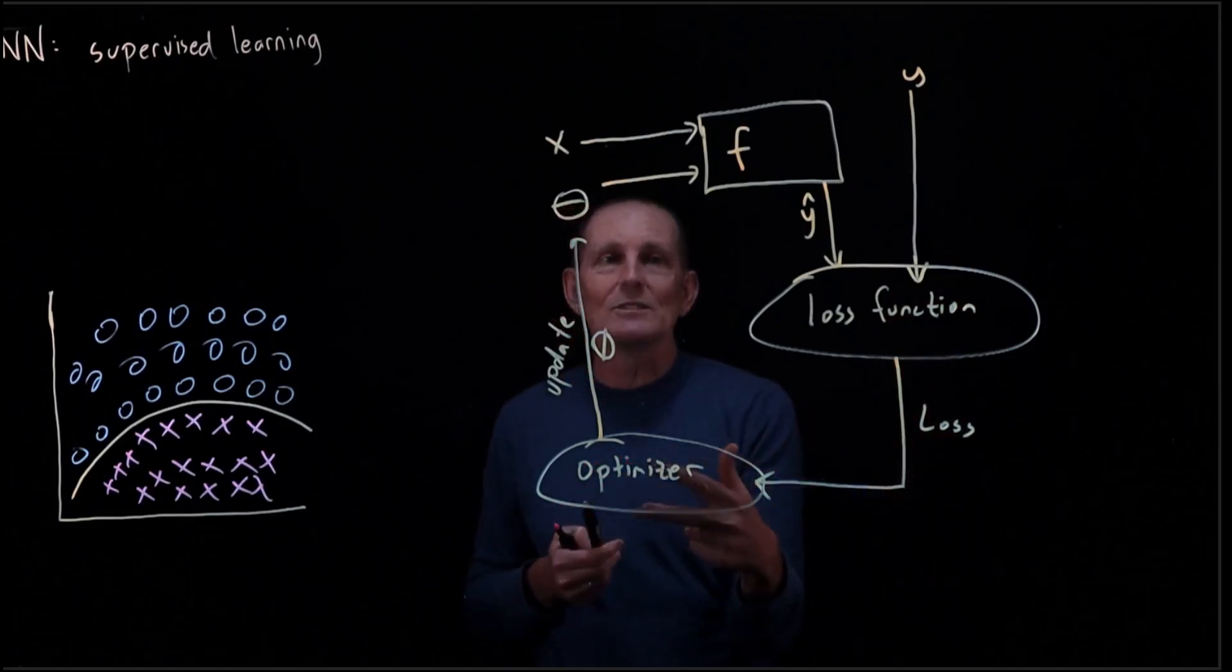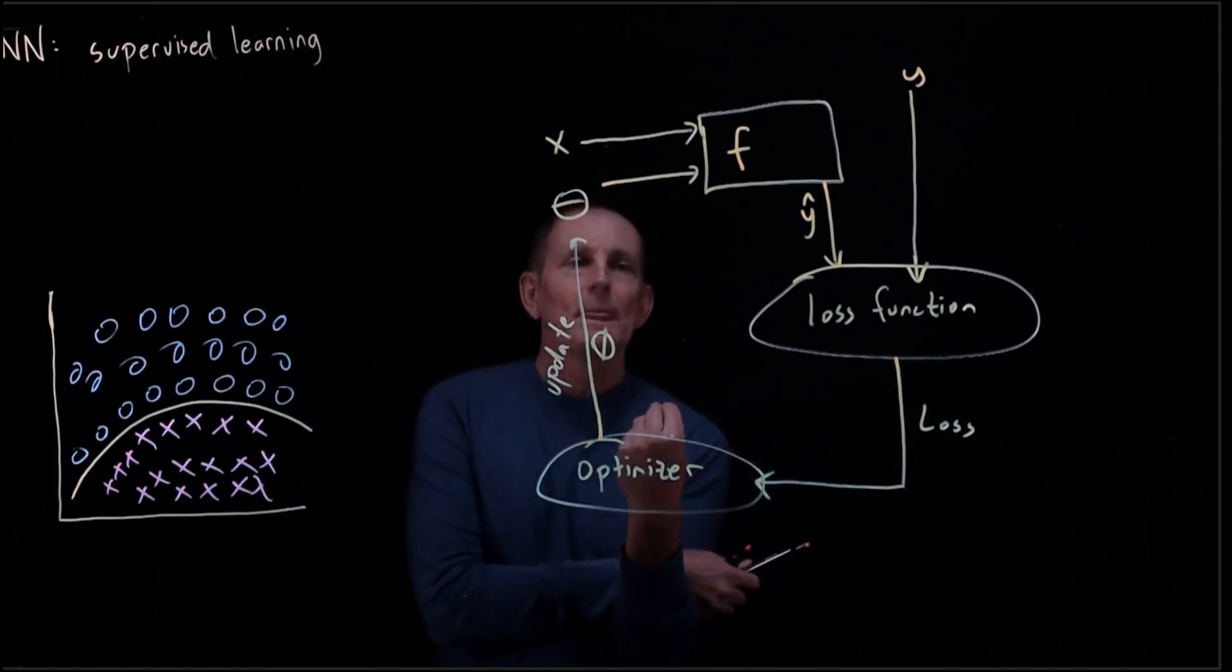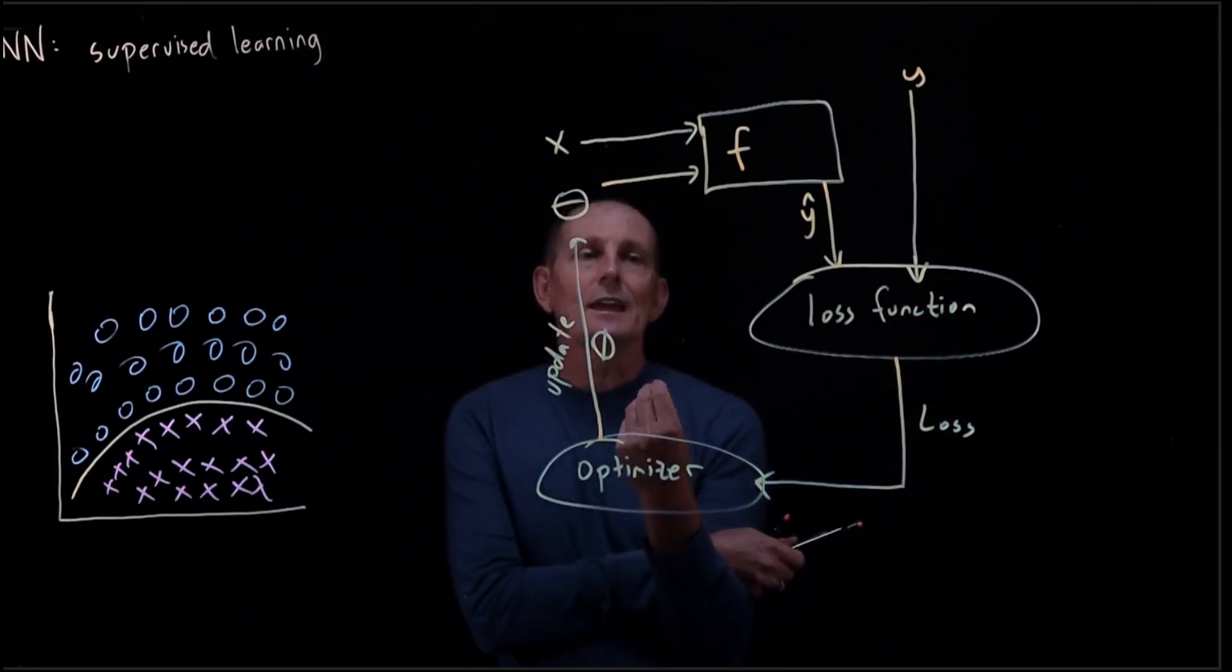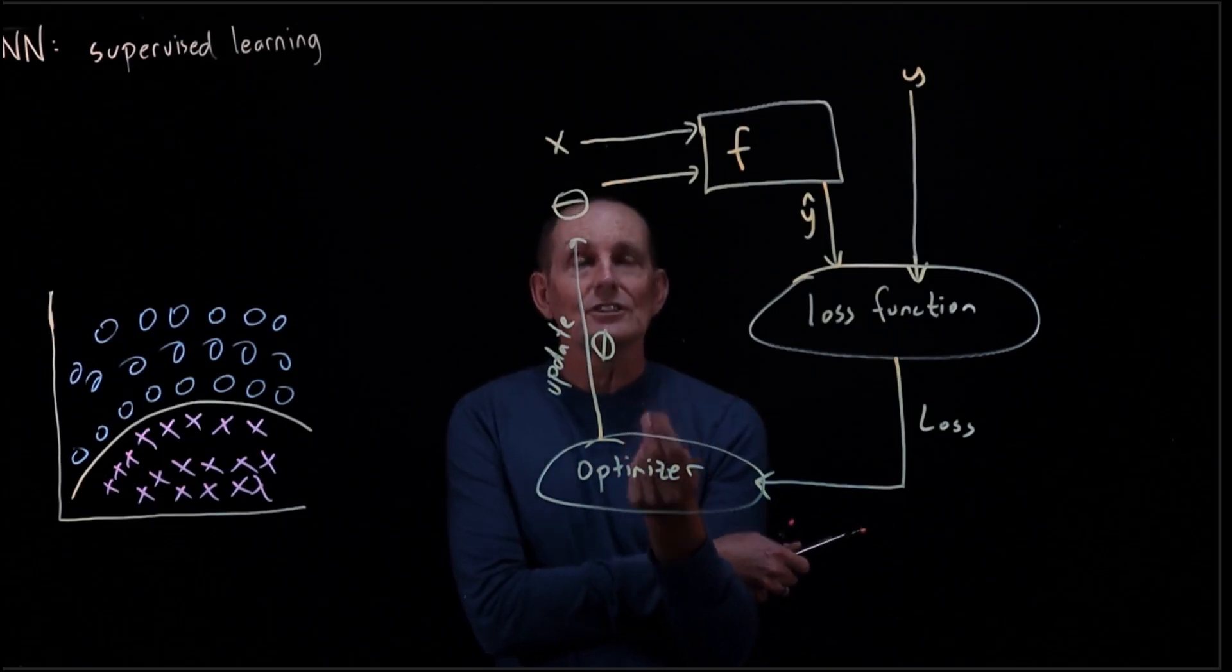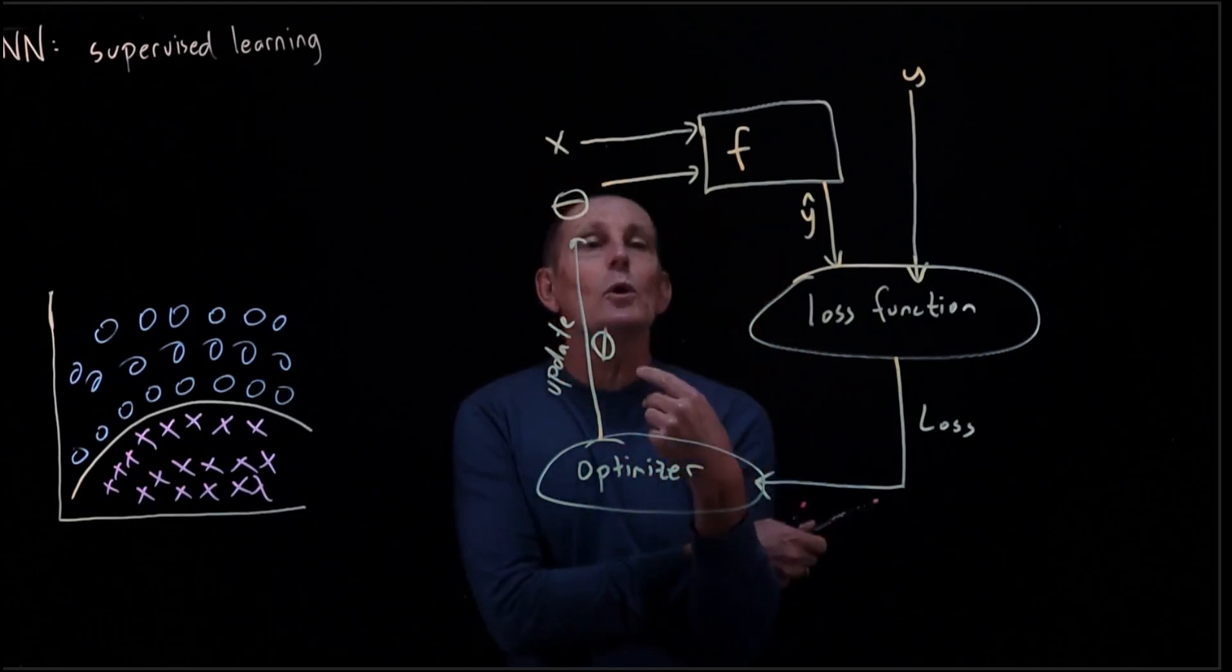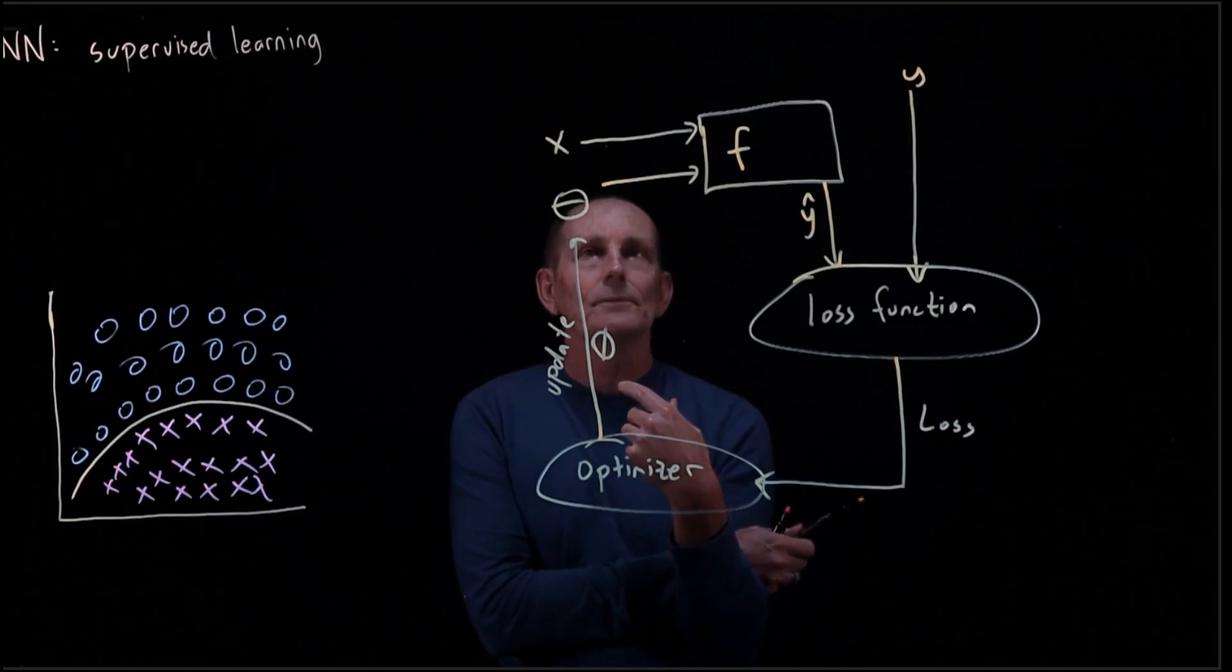And the optimizer, in a way we haven't specified yet, is going to make a small step towards improving theta. Not a lot, just a small step. And we feed that in. And now we feed in more X's and Y's.